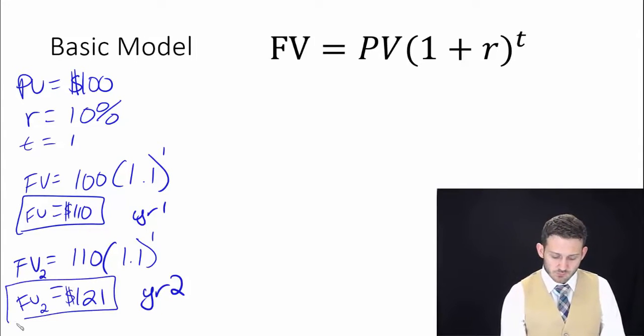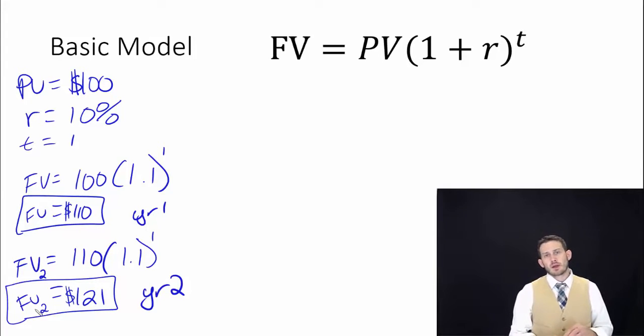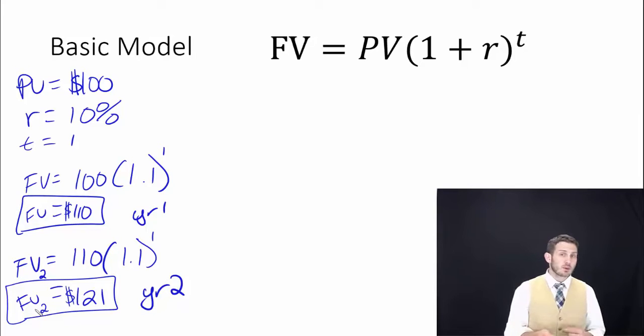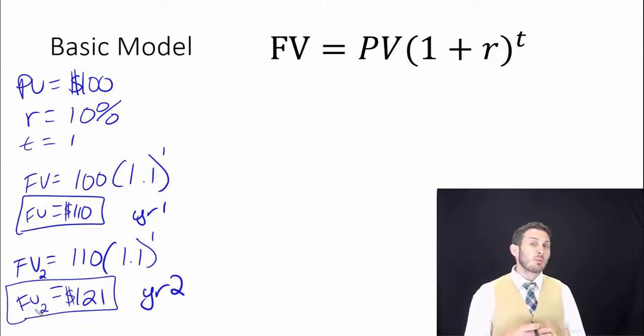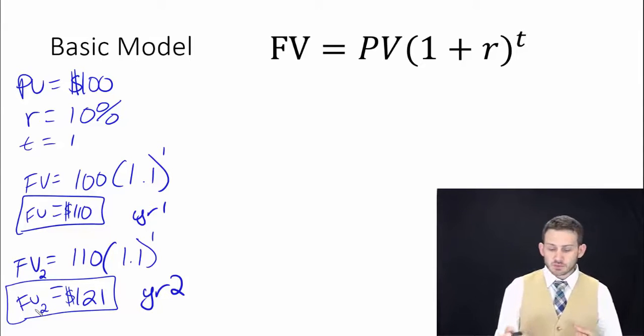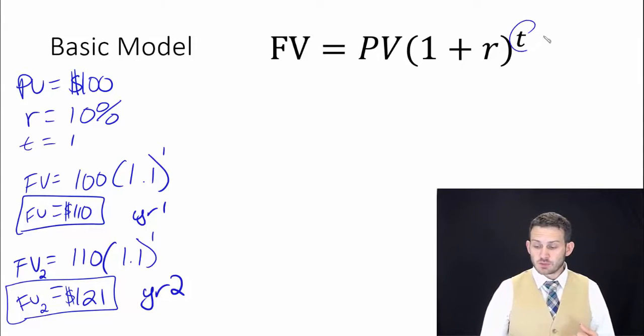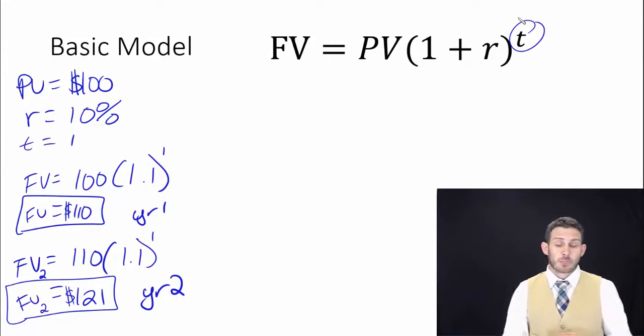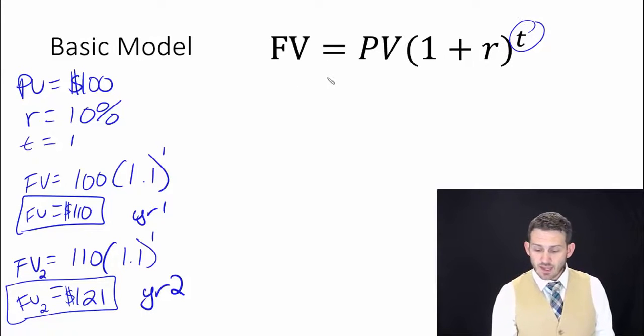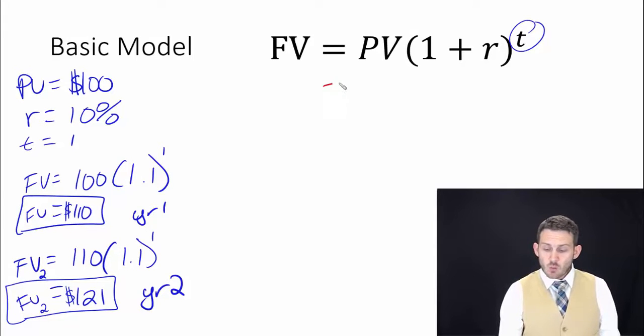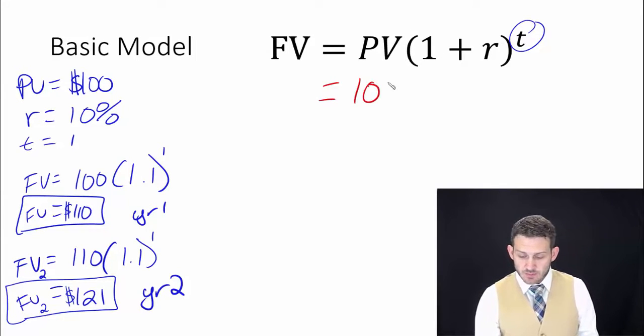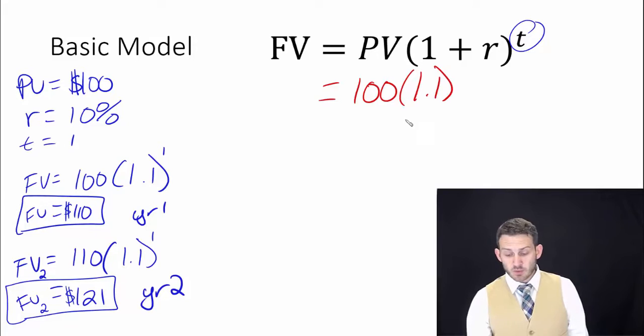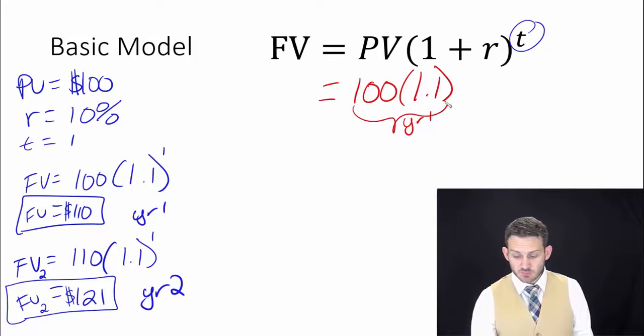If we want to look at year three, we can take the 121 and multiply by 1.1, but there's a much faster way to go about doing this, and that is by using that exponent. If we have a constant rate of return, we can actually institute this in a more straightforward way. We can use this hundred dollar value at the beginning of the time period and then essentially we're multiplying it by that 1.1 for year one, which generates the 110.